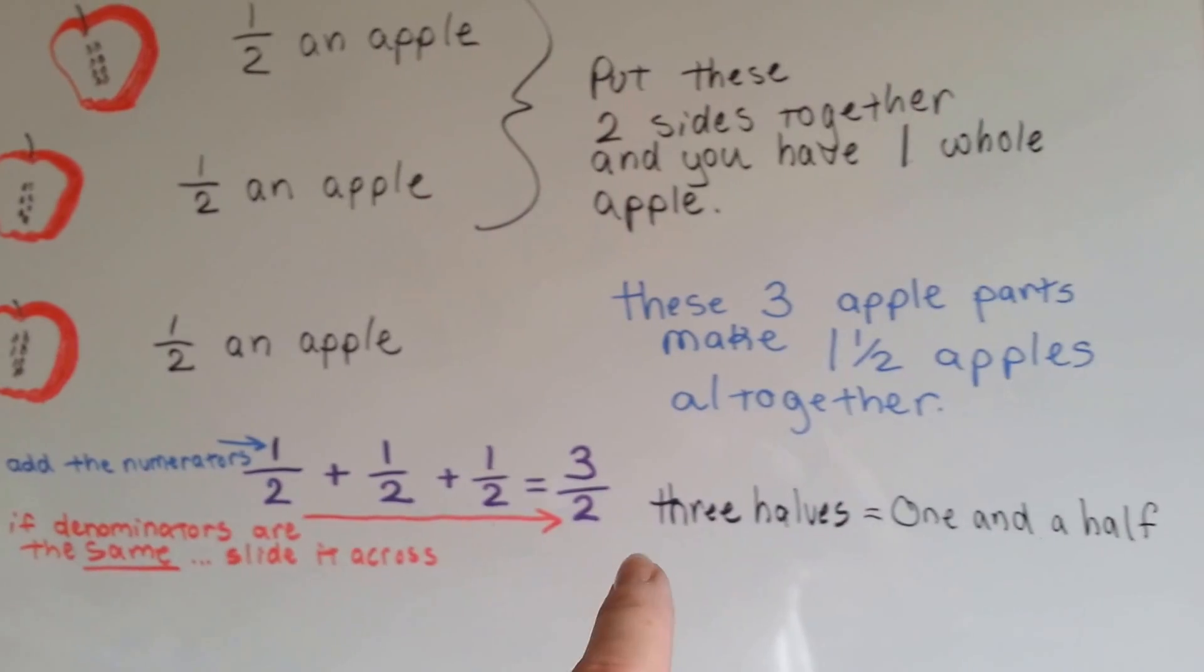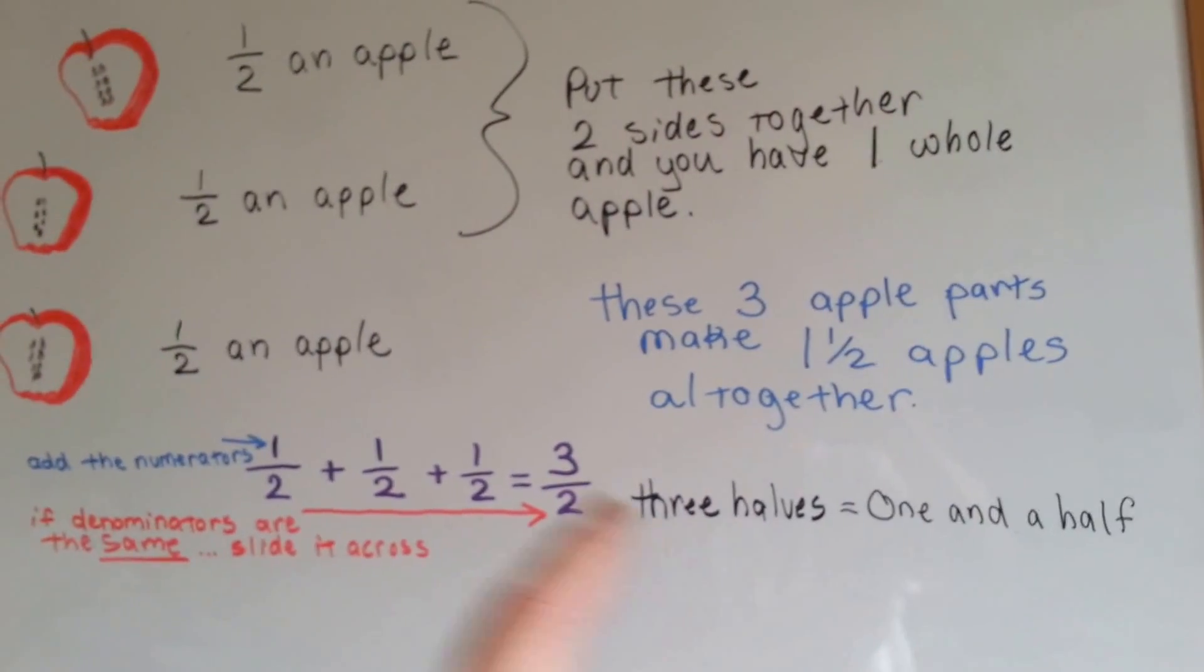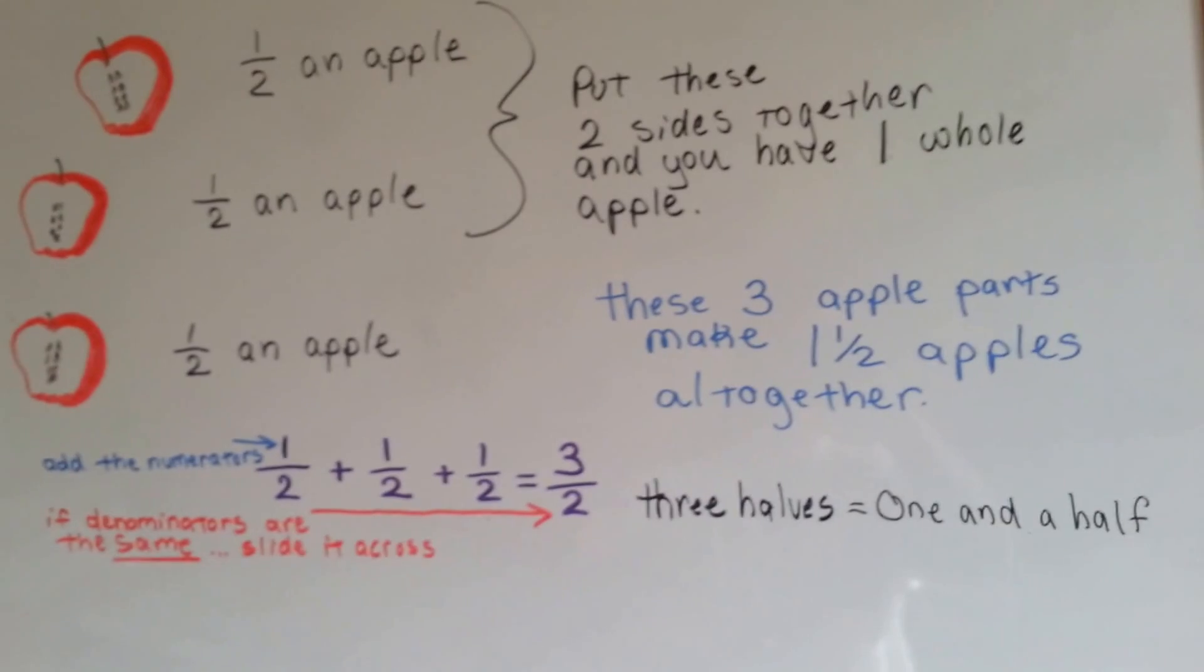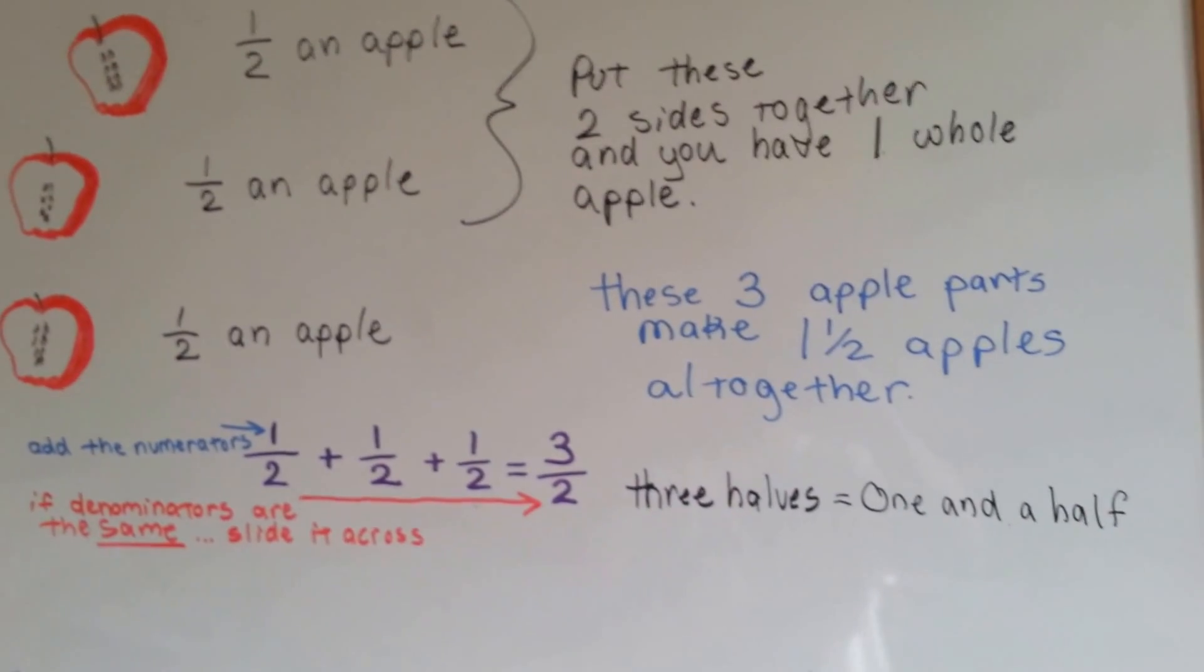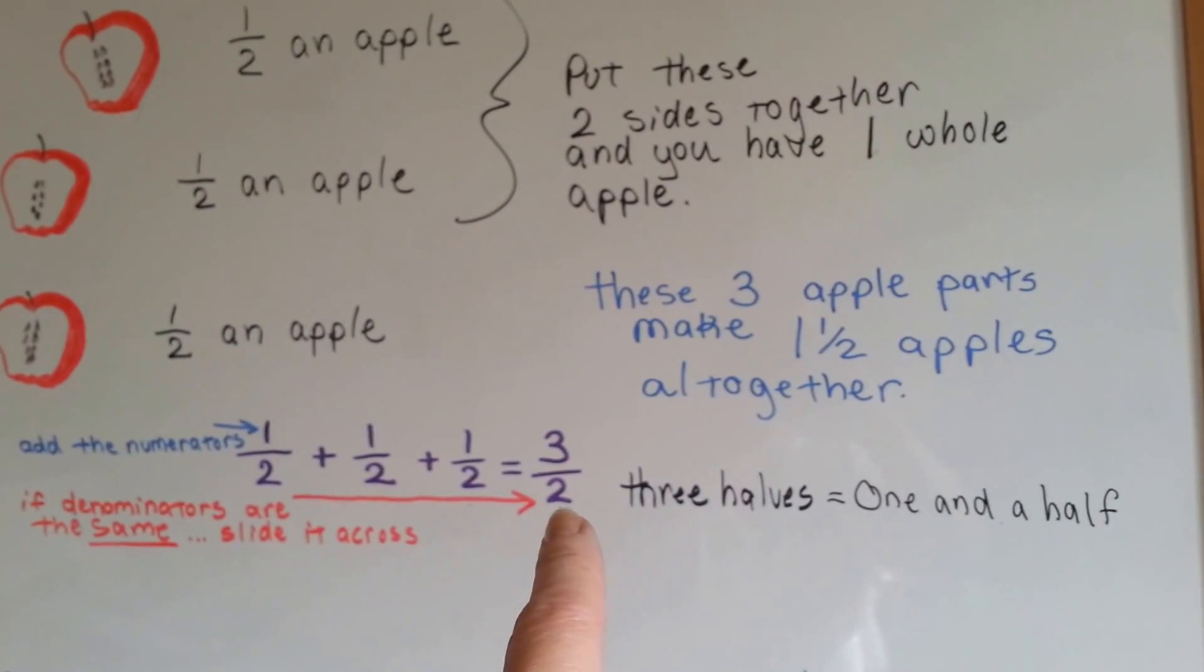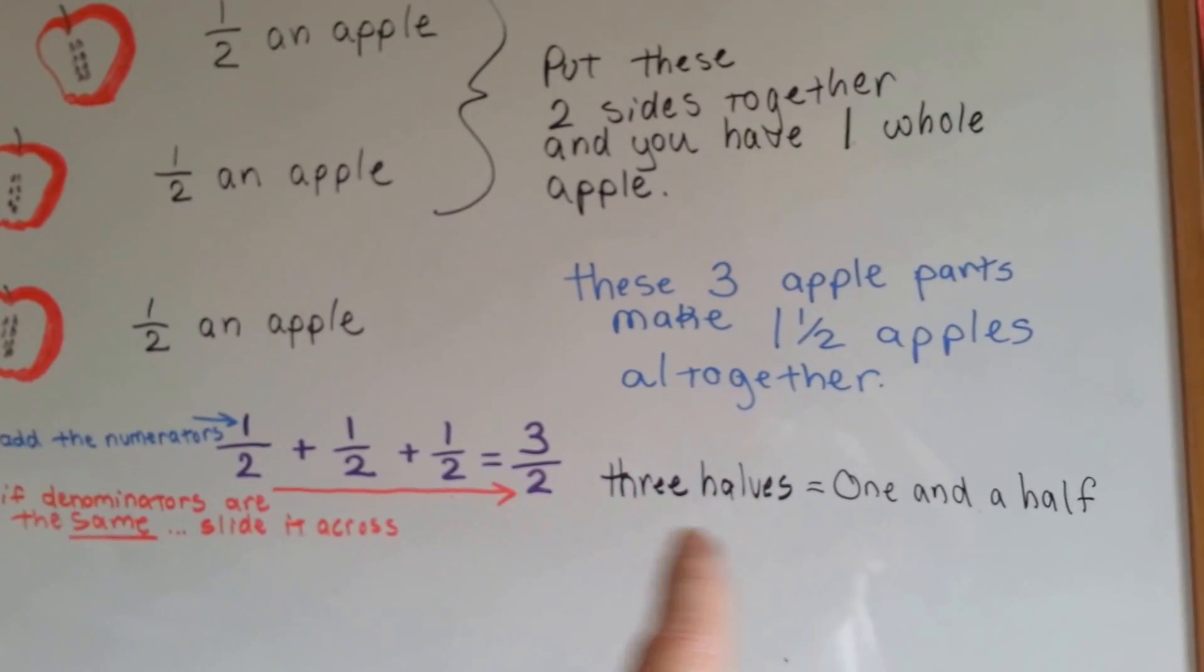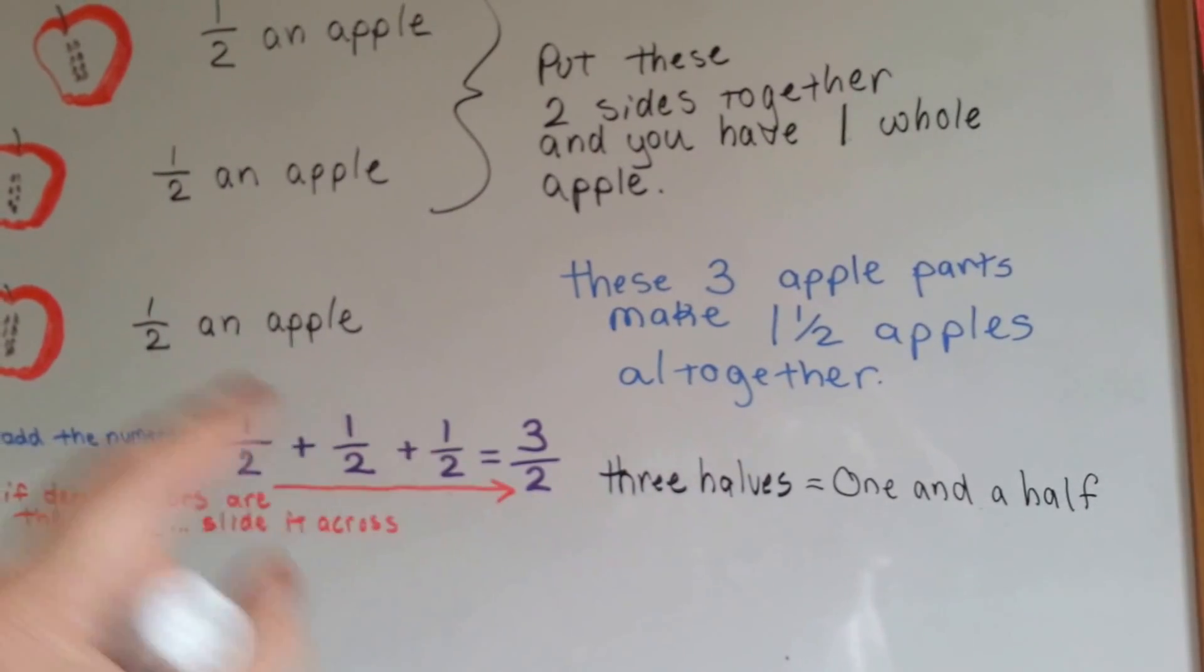One, two, three halves. Three halves is the same thing as one and a half apples. Because you'd have one apple here and the half left over. Three halves. This is an improper fraction because the numerator is bigger than the denominator. That means that there's a whole number hiding inside of there. There's a whole apple.